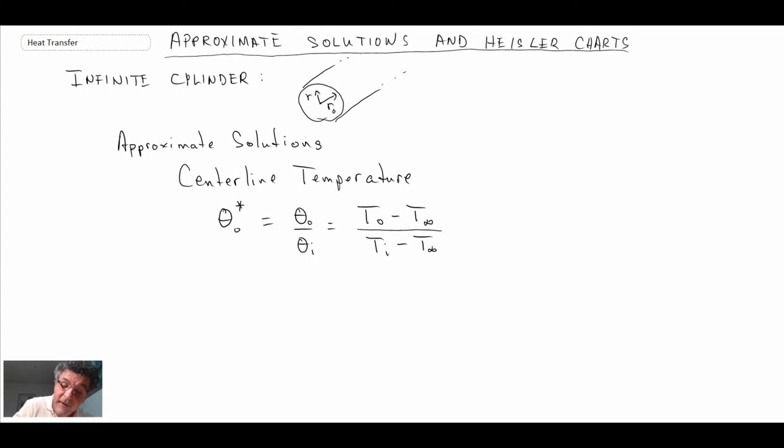C₁e⁻ᶻᵉᵗᵃ²ᶠ⁰. That is zeta, and then the Fourier number, Fourier number.